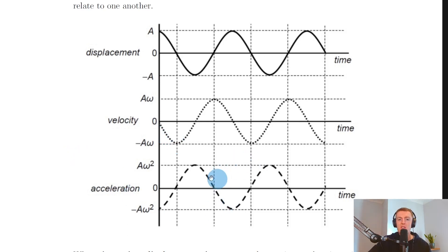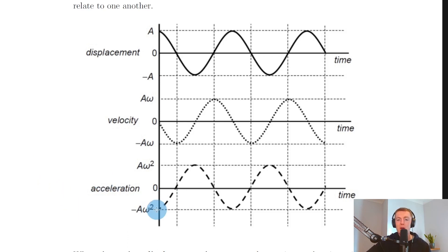We can differentiate again to get acceleration. Differentiating v equals minus A omega sin(ωt) with respect to time gives a equals minus A omega squared cos(ωt). That's why we have a cosine graph for acceleration, but negative to begin with because of that minus A omega squared. So we've gone from cosine for displacement, to sine for velocity, back to cosine for acceleration.